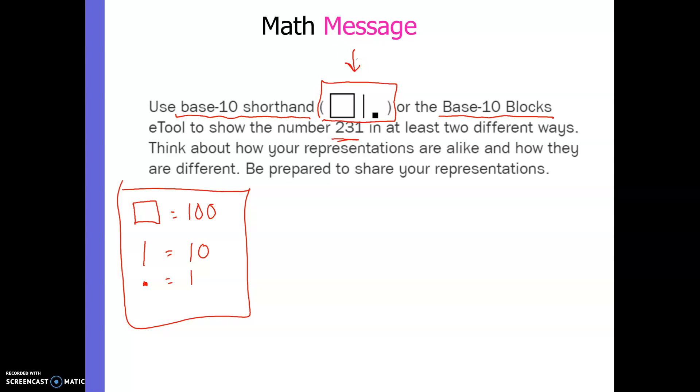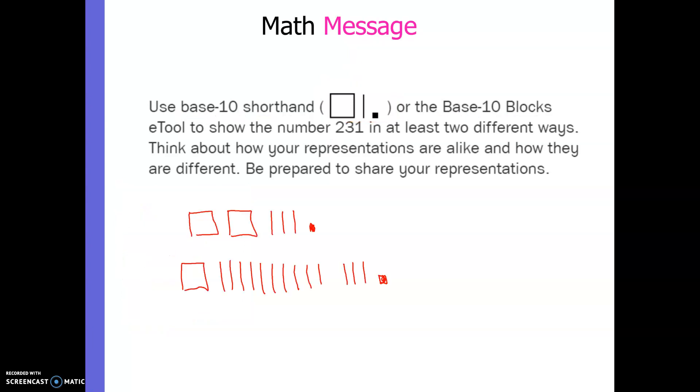We're going to be using what I call base-10 shorthand. That's when I'm drawing out the different base-10 symbols to represent place value. So this would represent 100. One line is going to represent 10 and a little square is going to represent 1. You could use base-10 blocks. I know that you have some in your toolkit. I don't know if you have enough to do what I'm going to ask you to do, but you could just use the symbols like I am.